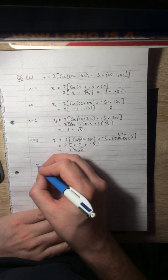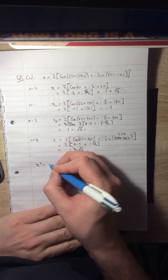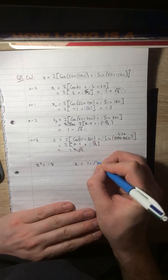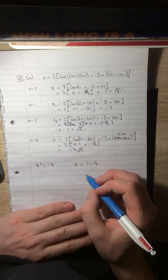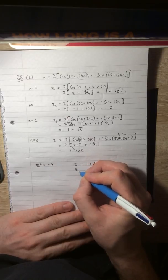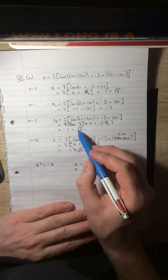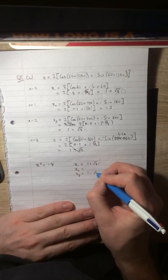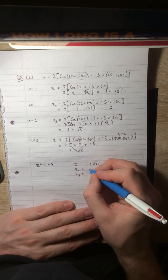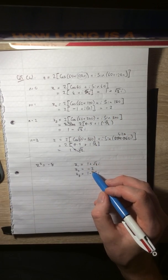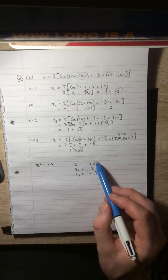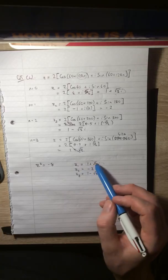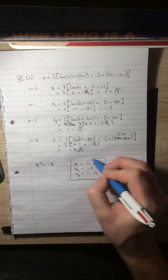So we get 1 + √3i, which is no good. Well, it's fine, but it's not a new one. So our three answers, if z³ is -8, then z₁ is 1 + √3i. -8 is a real number, so the complex conjugate has to be a root as well. That's z₃, 1 - √3i. And finally, z₂ is -2. So these are the three cube roots of -8.